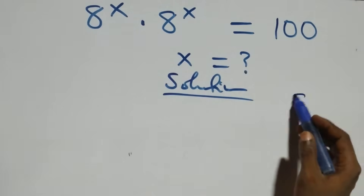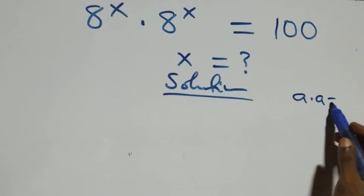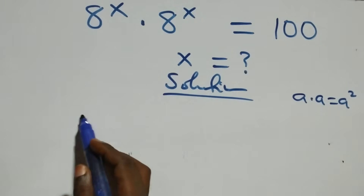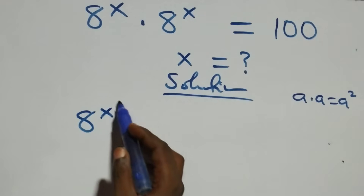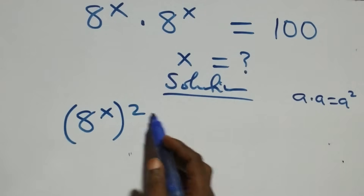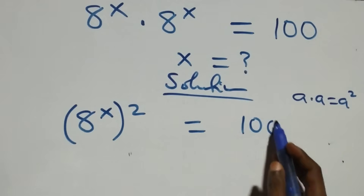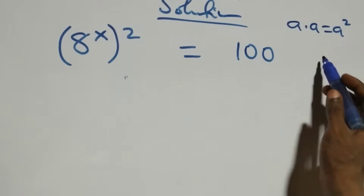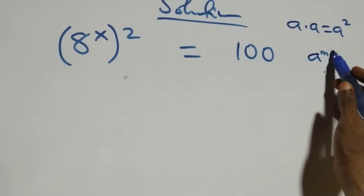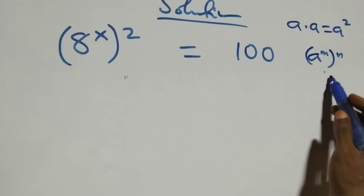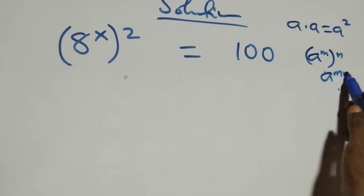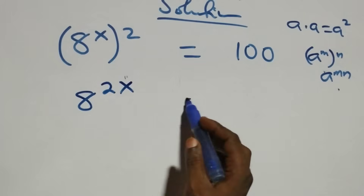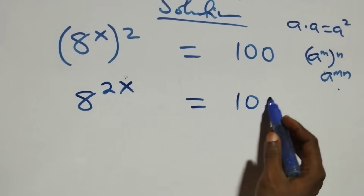We have a times a, which is the same as a squared — the same thing multiplying. Here we can write it as 8 raised to power x, all squared, equals 100. The next step follows the law of indices: when we have a raised to power m, raised to power n, it is the same as a raised to power mn. So the powers multiply, giving us 8 raised to power 2x equals 100.